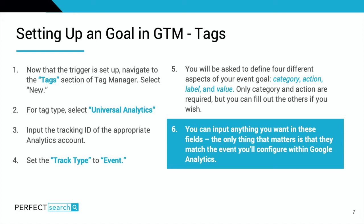What you put in those fields doesn't matter — you can input anything you want. The important thing is that it must match exactly the way you configure it within your Google Analytics goals. If you type it even slightly differently, it will not fire correctly and data will not be fed into Google Analytics. So if you use 'Homepage Top Navigation' as the category and 'Clicks' as the action, you have to make sure you label it exactly that way within Google Analytics when setting up the goal.